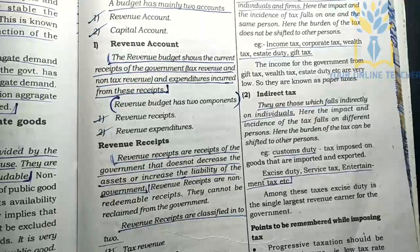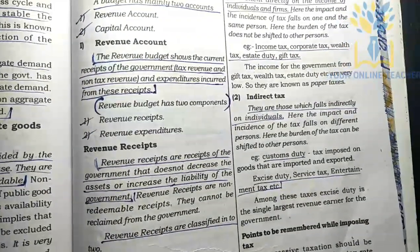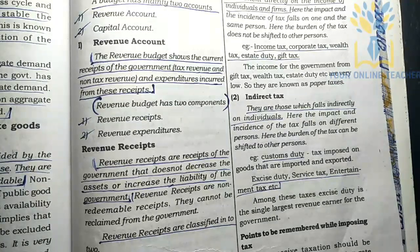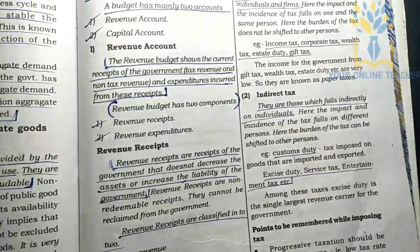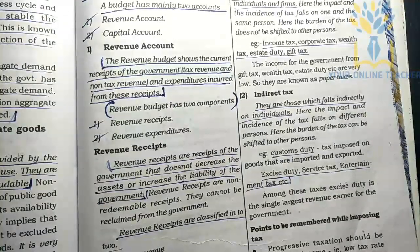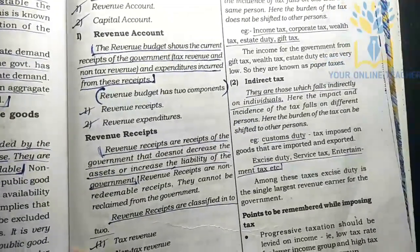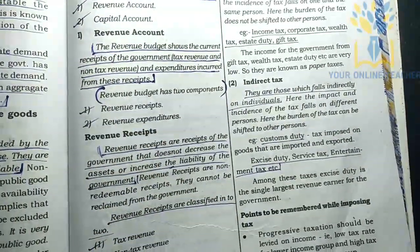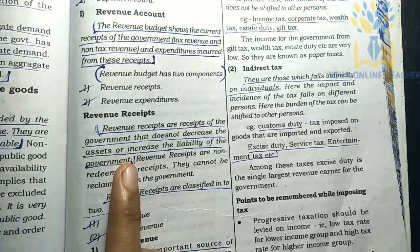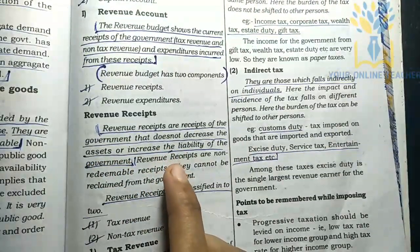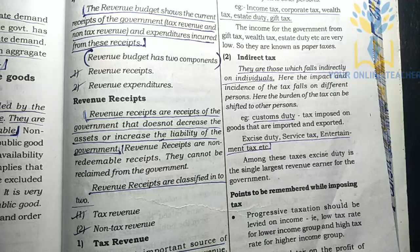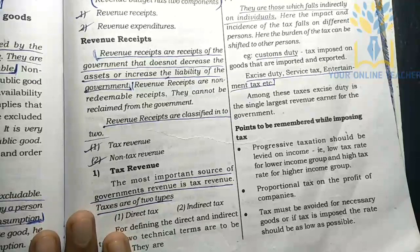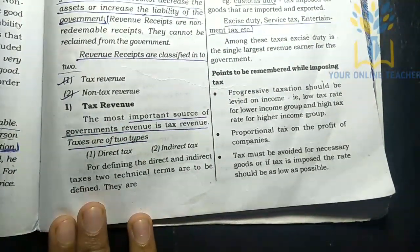The revenue account covers the government's current receipts. These include tax revenue and non-tax revenue. The revenue budget has two components: revenue receipts and revenue expenditure. Revenue receipts do not decrease assets or create liability for the government.